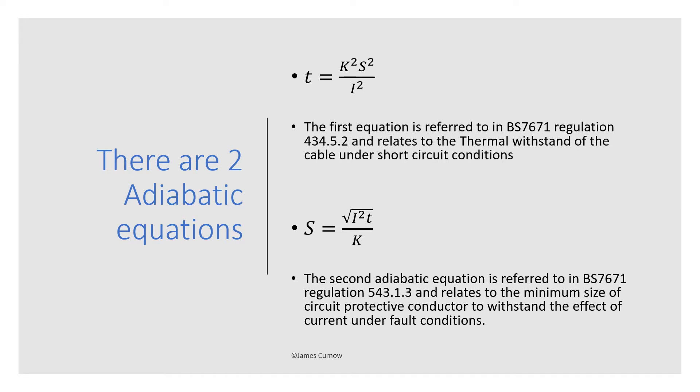The equation at the bottom is referred to in regulation 543.1.3 and this relates to the minimum size of the circuit protective conductor to withstand the effects of current under the fault conditions, so this will give you the minimum size of conductor for the CPC.